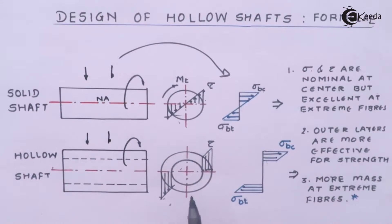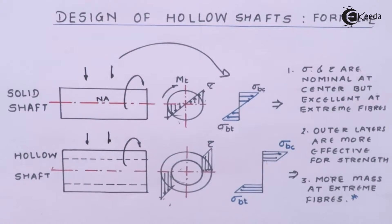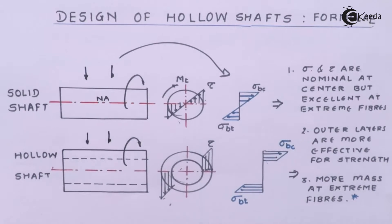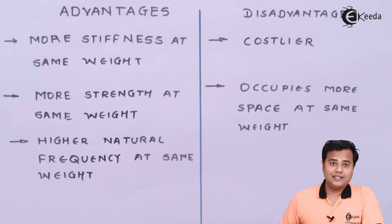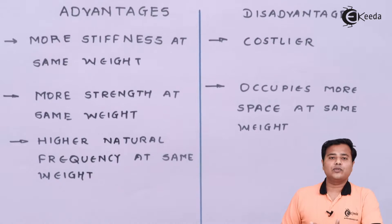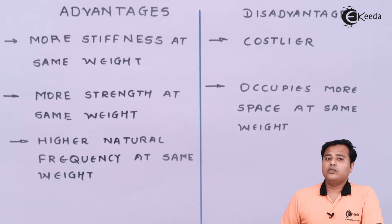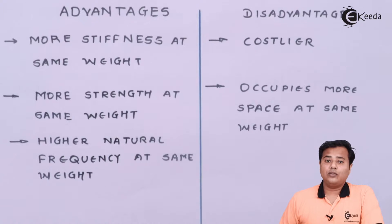The extreme fibers must have the capacity to resist these stresses, and the outer layers are more effective for strength. In a hollow shaft, more mass is positioned away from the center, which helps sustain these stresses properly. That is why hollow shafts are preferred over solid shafts — more material is shifted toward the extremities, away from the center.